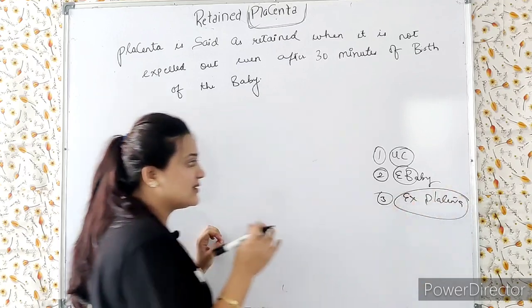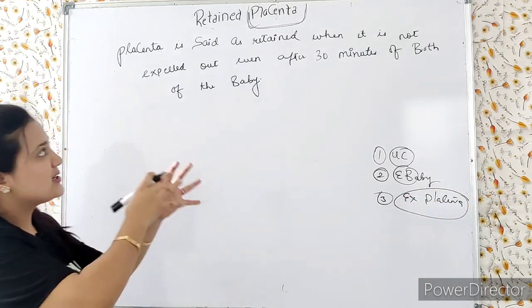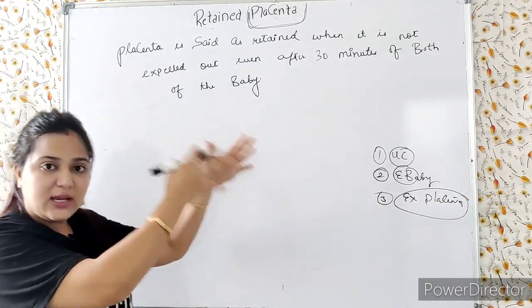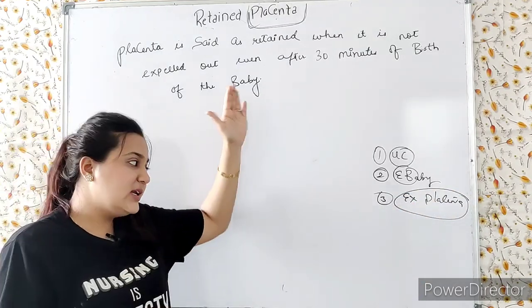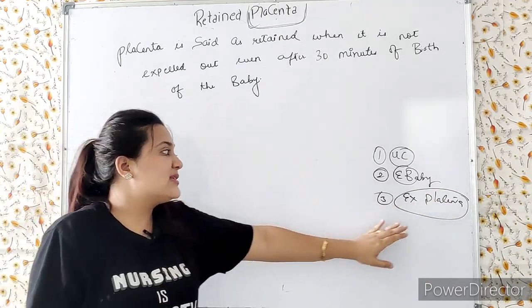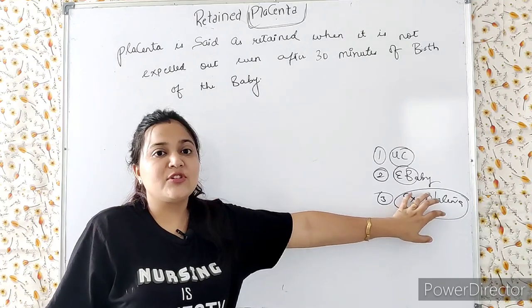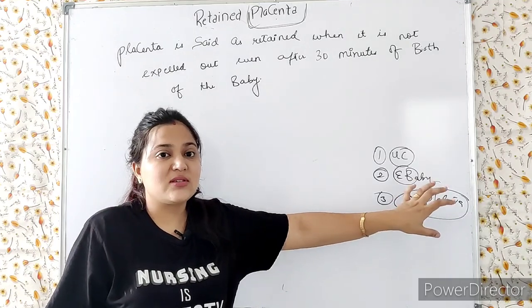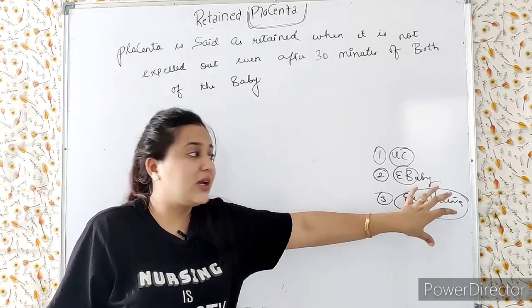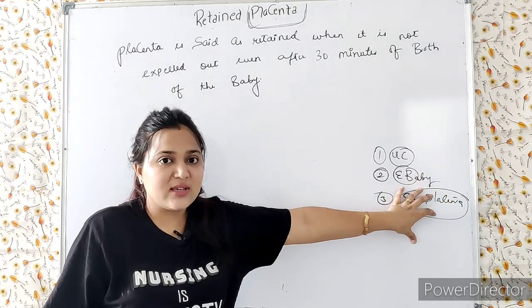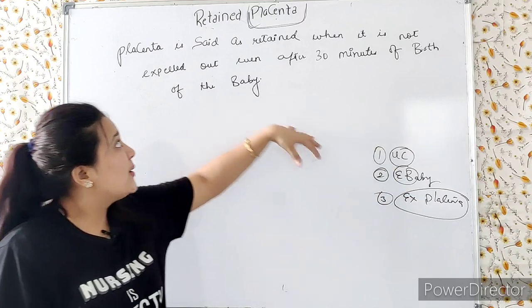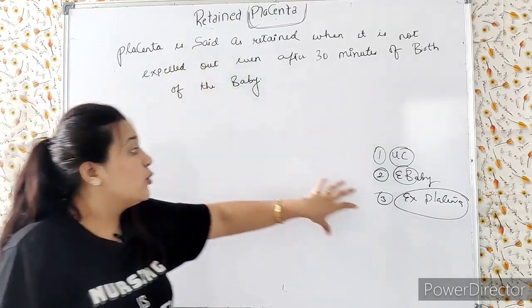Retained placenta means the placenta remains in its own place — it is retained. This means that the physiological processes involved in the expulsion of placenta are interfered with, which is why placenta is retained.